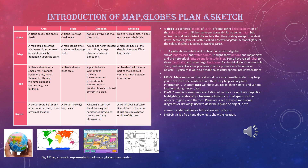A globe is a small scale, 3-dimensional model of the earth. It is mounted on an axis on which it can rotate freely. Land masses and water bodies are also printed on it. Due to its small size, a globe is difficult to read. It does not have enough space to cover finite details of every geographical feature.